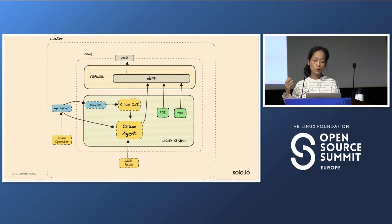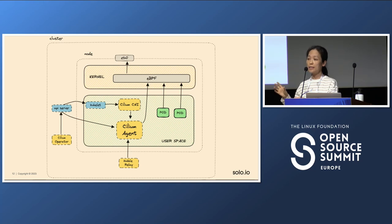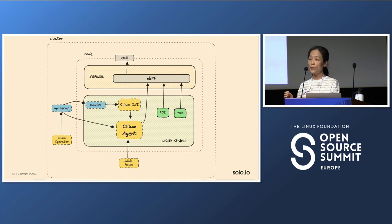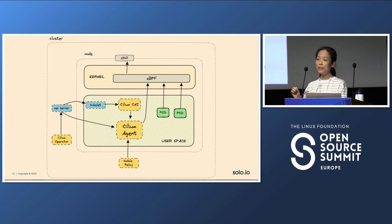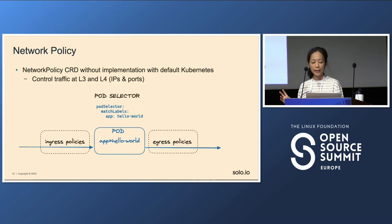The architecture of Cilium is pretty straightforward. The Hubble relay provides the Hubble UI components. There is the Cilium CNI that implements the CNI, and the Cilium agent is deployed as a DaemonSet running on every single Kubernetes node. The Cilium operator sets up everything at the beginning of the install and makes sure every other component is operating and running.